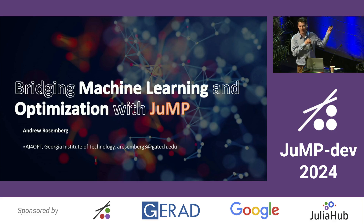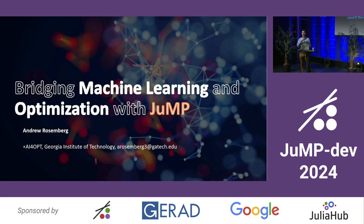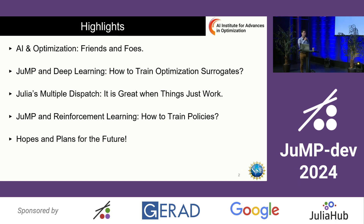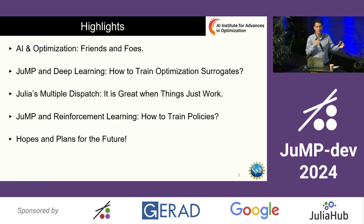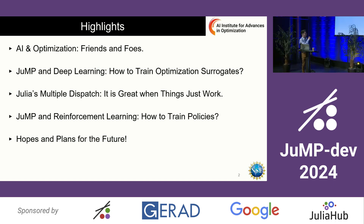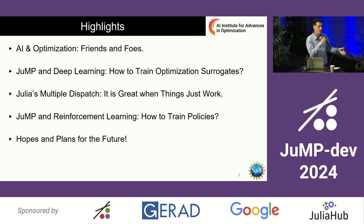I'm going to talk a little bit about bridging machine learning and optimization. It's great to present to JuMP Dev because most people know more than me about everything I'm going to talk about, so it's going to be very easy. I'll cover: the relationship between machine learning and optimization, how I've used JuMP to help train machine learning models, Julia's multiple dispatch making everything easy, and JuMP and reinforcement learning — how I've solved sequential reinforcement learning problems with JuMP — and perhaps a few words for the future.